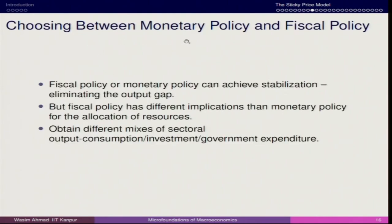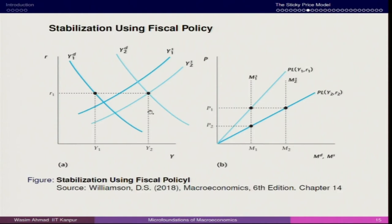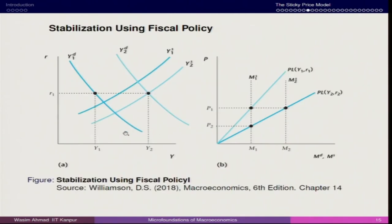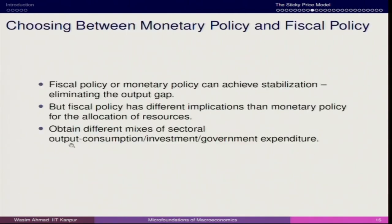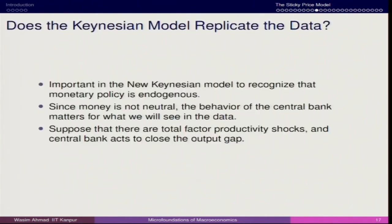Choosing between monetary and fiscal policy: either fiscal policy or monetary policy can achieve stabilization by eliminating the output gap. But fiscal policy has different implications than monetary policy for the allocation of resources — often different mixes of sectoral output, consumption, investment, and government expenditures. The stabilization policies always have bigger impact on output but come with limitations regarding interest rate, so fiscal policy has to be combined with monetary policy. This is set up similarly to the real business cycle model.